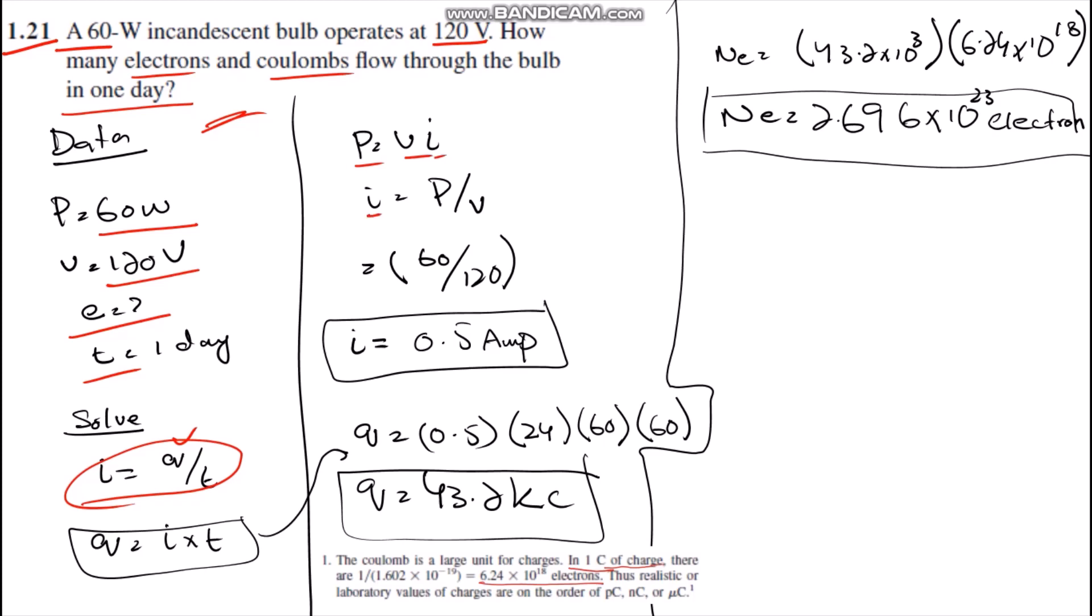Then we get I equals P over V from the power equation. We substitute the values of power and voltage, and we get the value of current which is 0.5 amps. Then we know that Q equals I times T.